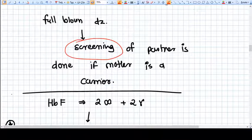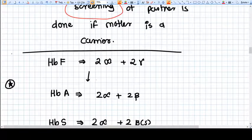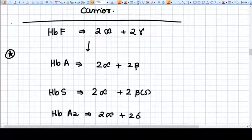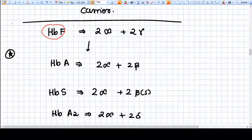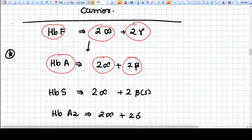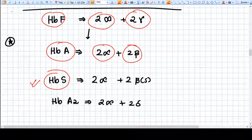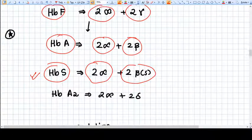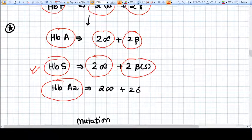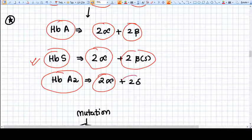Now let's see some types of hemoglobin. Hemoglobin F is fetal hemoglobin with two alpha chains, two gamma chains. Adult hemoglobin has two alpha chains, two beta chains. Hemoglobin S means sickle cell hemoglobin has two alpha chains and two beta chains, but the beta chain will be defective. Hemoglobin A2 has two alpha chains, two delta chains.